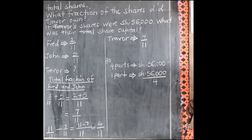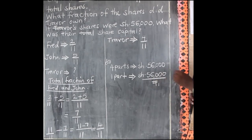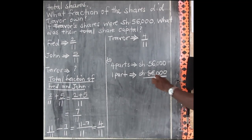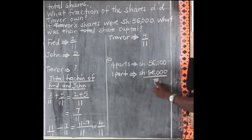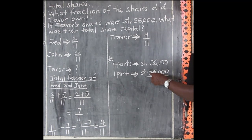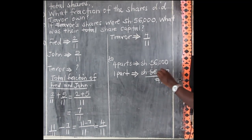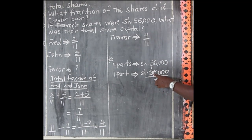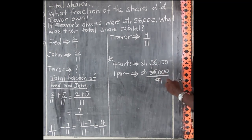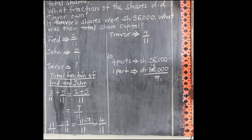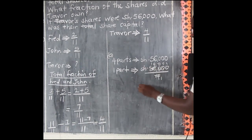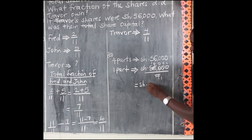How many times can 4 go into 56? This is 1 remainder 1, making 16. And 16 divided by 4 is 4. So you end up getting 14,000 shillings. Therefore, 1 part represents 14,000 shillings.